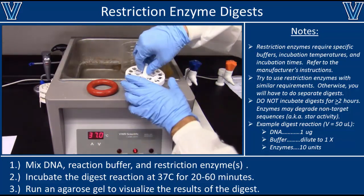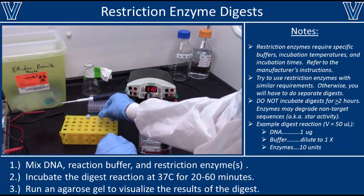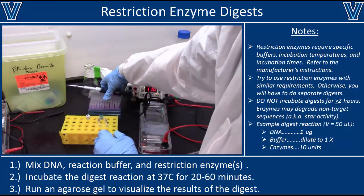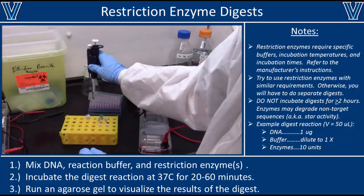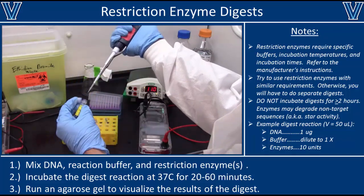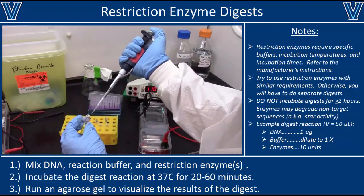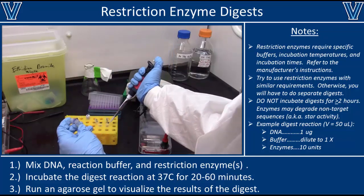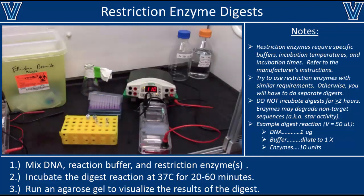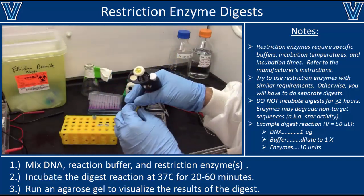Once your digest is complete, remove it from the water bath or thermal cycler and bring it to the hood to add DNA loading buffer. You'll want to run the samples on an agarose gel to remove the restriction enzymes and analyze the results. If our digest was successful, we should see two bands in the plasmid sample, confirming we successfully cut out the old gene from the plasmid backbone. Since this is a 50 microliter digest, we're adding 12 microliters of loading buffer to each tube.